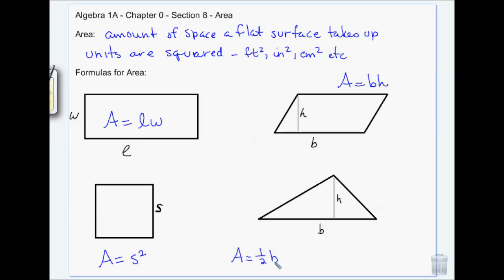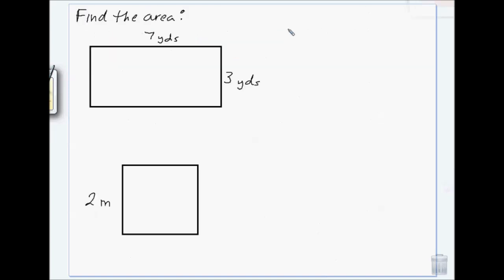For a triangle, it's one-half base times height. If you don't like fractions, you can think of it as base times height divided by two — either way works if fractions are a source of anxiety.